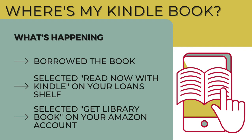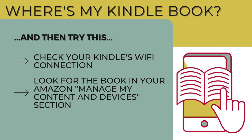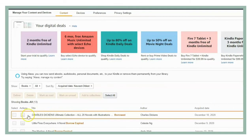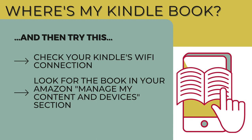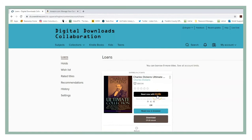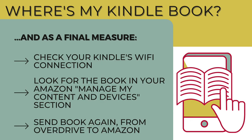For OverDrive users transferring books to Kindle, it can happen that a Kindle book does not show up in your Kindle library — it's been checked out on OverDrive and borrowed on Amazon, but there's still nothing on your Kindle. First, make sure the Wi-Fi connection on your Kindle is turned on. Then go to your Amazon account and check the Manage My Content section. If the book shows up in that list, opt to re-deliver it and make sure you're sending it to the correct Kindle. If it never shows up on your Amazon account at all, go back to OverDrive, go to your loan shelf, and click the Read Now with Kindle button again to restart the process.